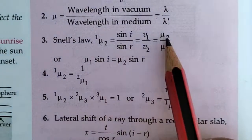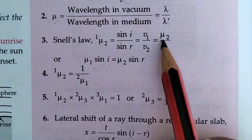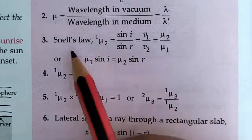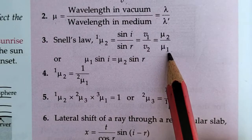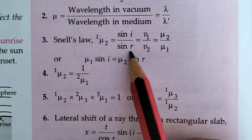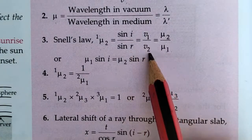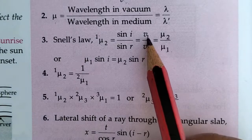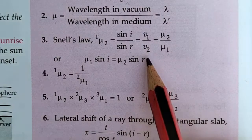The third formula: according to Snell's Law, mu₂₁ — that means refractive index of second medium divided by refractive index of first medium — equals sine i divided by sine r, which also equals v₁ divided by v₂, meaning velocity of light in the first medium divided by velocity of light in the second medium.